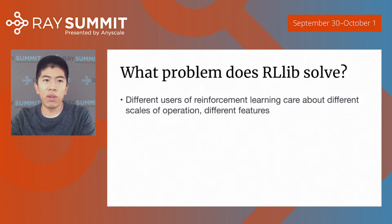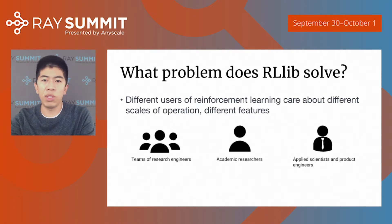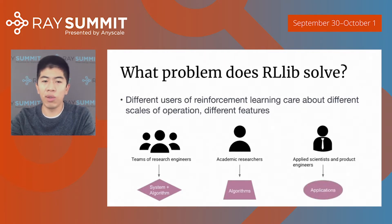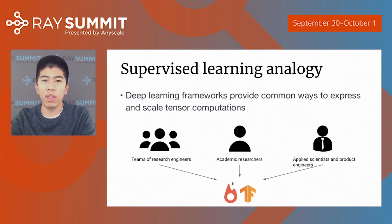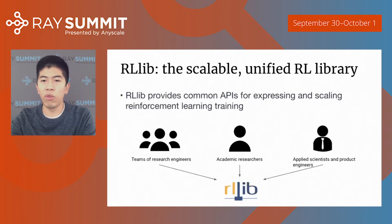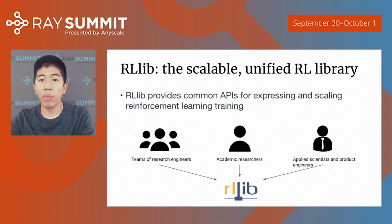Different users of RL care about different features because they are focusing on different aspects of reinforcement learning. Teams of research engineers care both about building RL systems and the applications. Academic researchers care primarily about the algorithms. And applied scientists and product engineers are trying to leverage systems and algorithms to build their application. To draw an analogy with supervised learning: in that field, there are many deep learning frameworks like PyTorch and TensorFlow that provide common ways to express and scale tensor computations. RLib serves the same role for reinforcement learning, providing common APIs for expressing and scaling RL training no matter what your use case is.